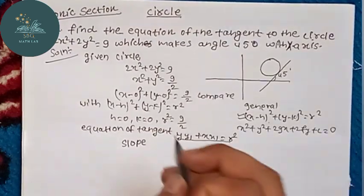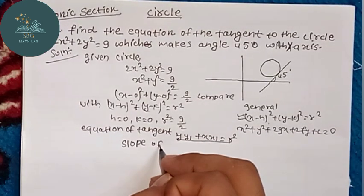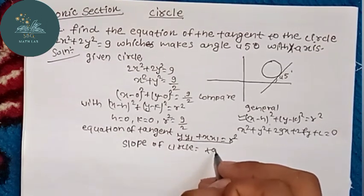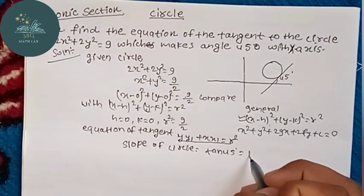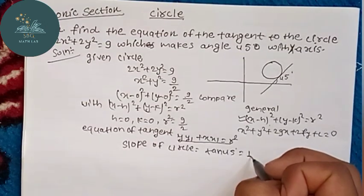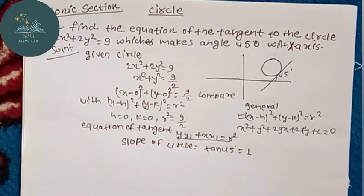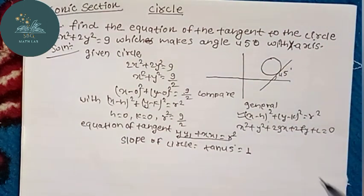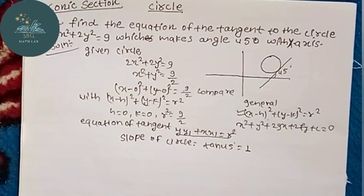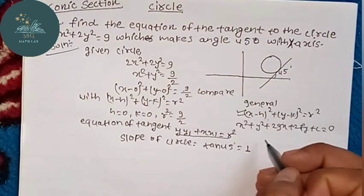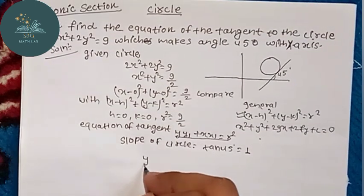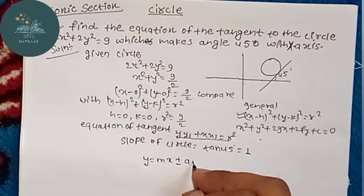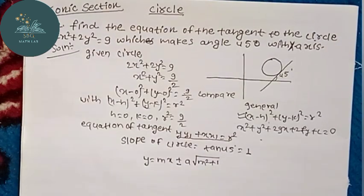So I know the slope of the circle. At 45 degrees, slope equals 1. This is the way — I'm going to make a drawing. I'm going to make a condition for the equation of tangent. y equals y-max plus or minus a root of r squared plus 1 — equation of the tangent.